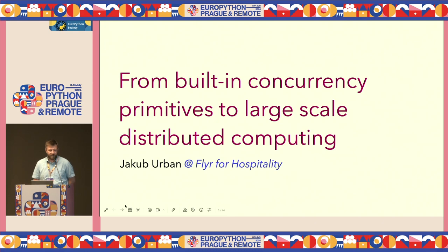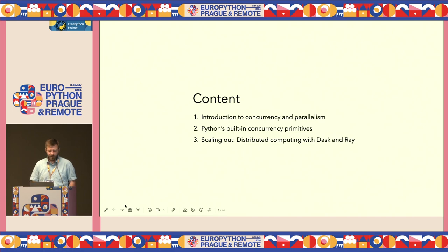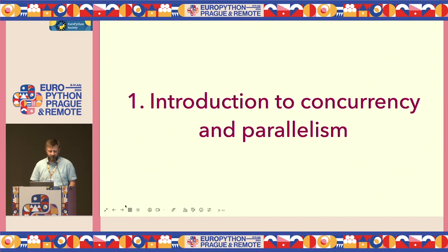I work for a company called Flyer for Hospitality. I'm responsible for a data science platform. As the title said, I would like to introduce you to what built-in concurrency primitives Python offers and how to scale to large-scale distributed computing. The content will approximately be an introduction to concurrency and parallelism, Python's built-in primitives, and then scaling out. So let's start.